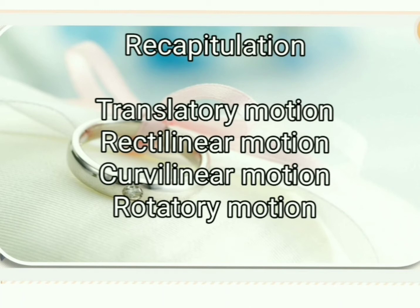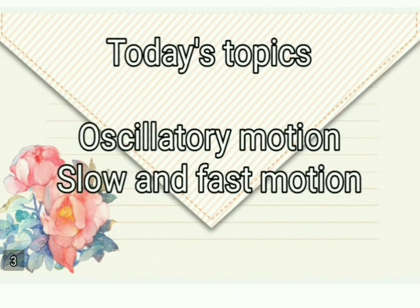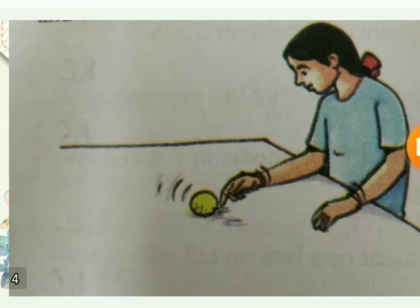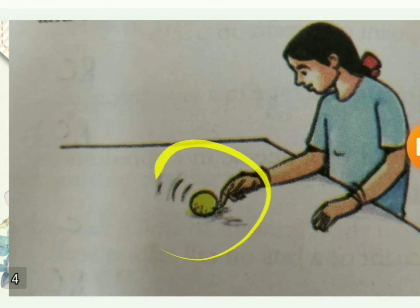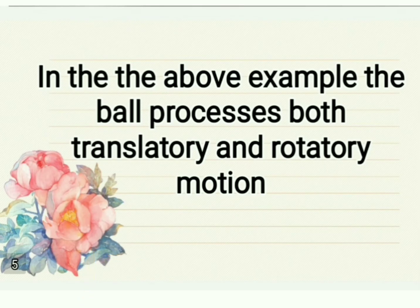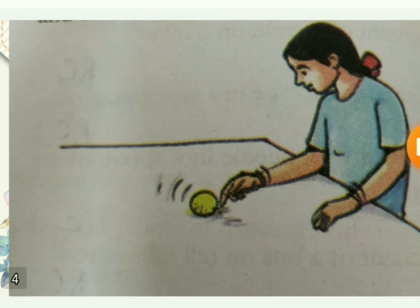Now we go with today's topic: oscillatory motion, and also when a body is said to be moving very slow or fast — these we will discuss today. Here I have a picture where a girl is pushing a ball with her finger. When you push the ball like that on the surface of a table, it will move from one end to another. If you see clearly, you can say it is in translatory motion.